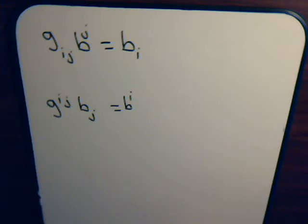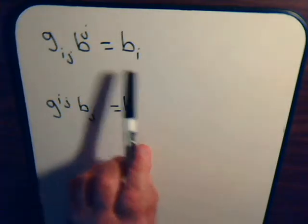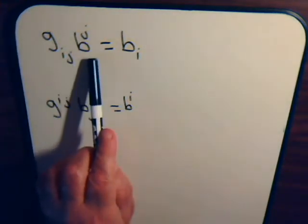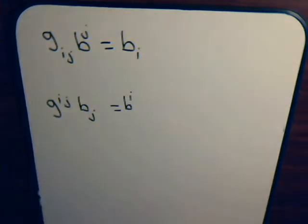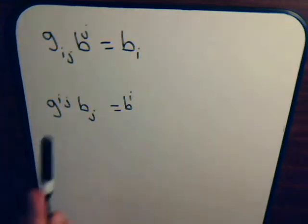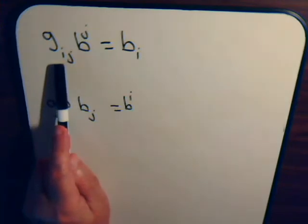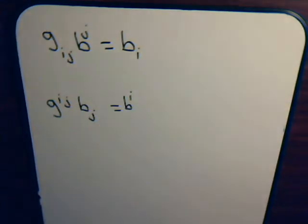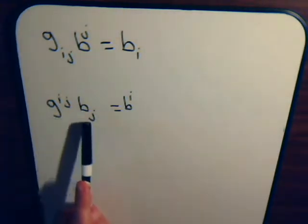Right now we could just think of it like this: these repeated indexes, instead of summing over them, we could think that they just obliterate each other so that B gets labeled with the index that's left over. In reality as we'll see in a few moments, this is a matrix times a column vector gives us another column vector.